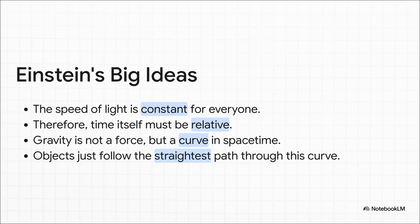It all started from one simple, weird fact. The speed of light is the same for everyone, no matter how fast you're moving. And if that's true, the only way the math works out is if time itself is flexible. It can slow down, it can speed up. Oh, and gravity? It's not a force pulling things. It's the actual fabric of space and time. Spacetime being warped and curved by massive objects. We're not being pulled toward the Earth. We're just following the straightest possible path through a curved space.